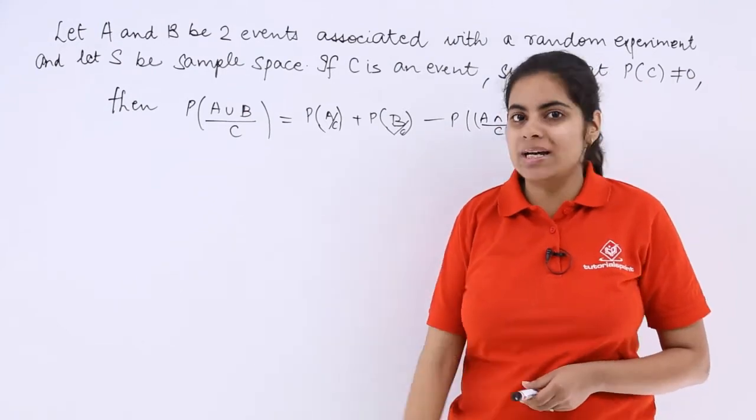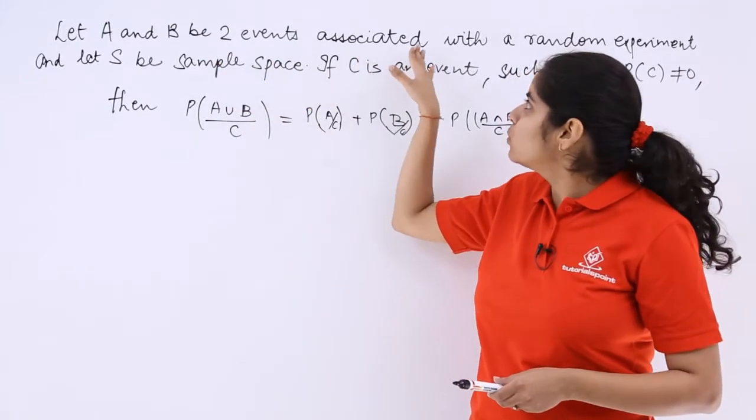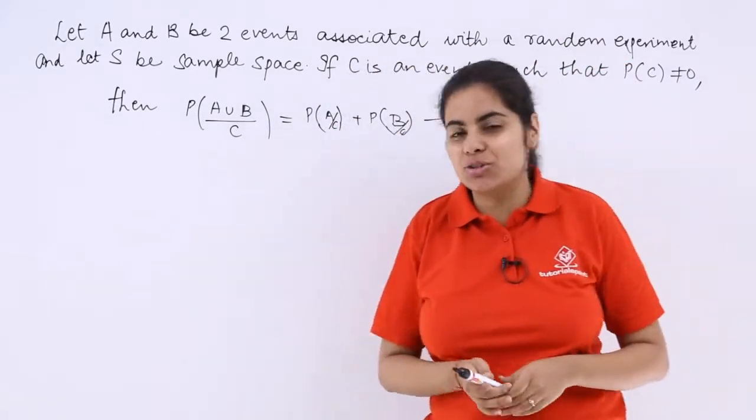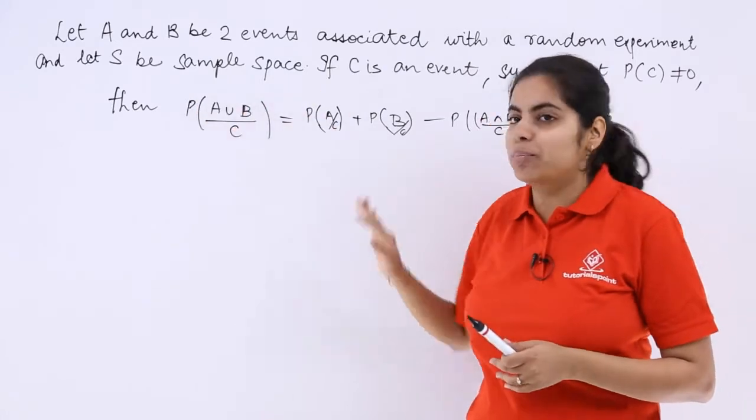Let's know another theorem which may be useful to us. It says let A and B be two events associated with a random experiment. So you have two events given to you and let S be the sample space.